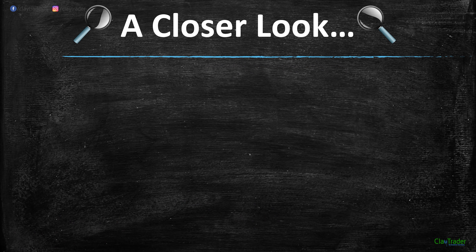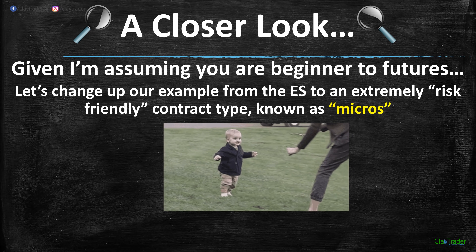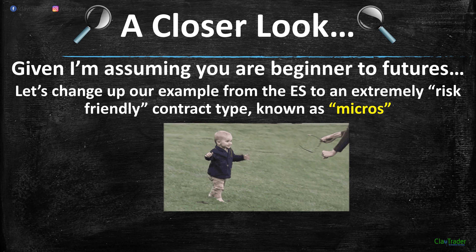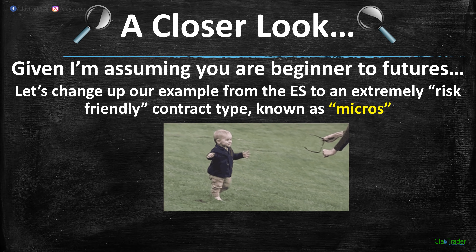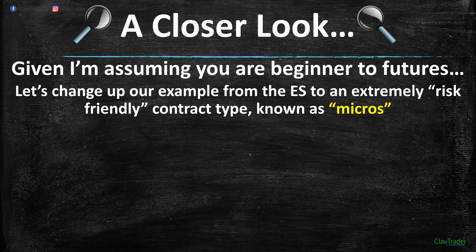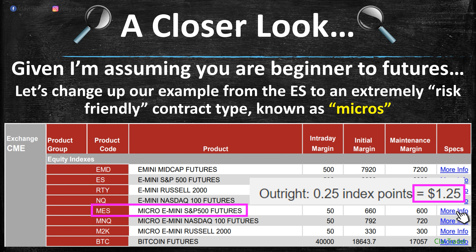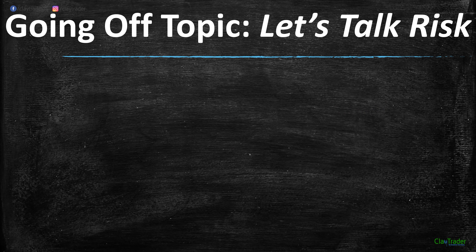Now, given I'm assuming you're a beginner to futures, I'm going to change up our example from the ES to an extremely risk-friendly contract type known as micros. They're relatively new — within the past year — and they're quite frankly very awesome. So we are now going to be focused on the MES. We've been looking at the ES, but now let's look at the MES — the M just standing for micro — the micro e-mini S&P 500 futures.